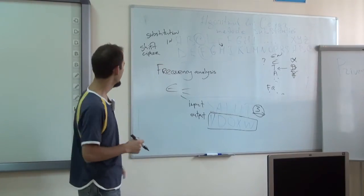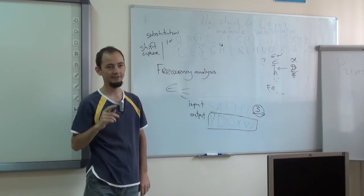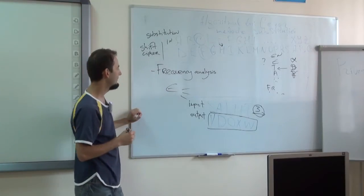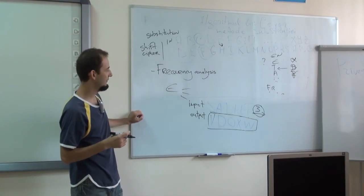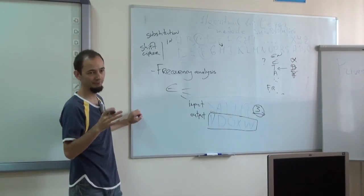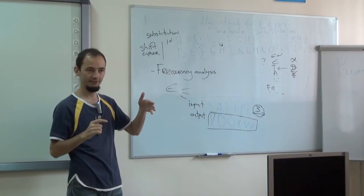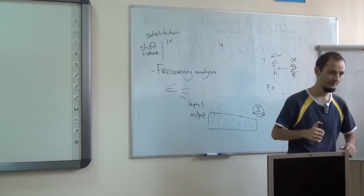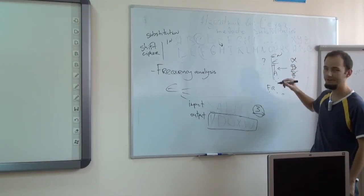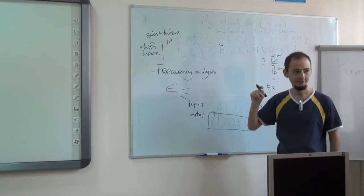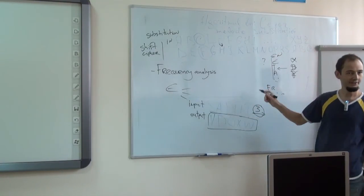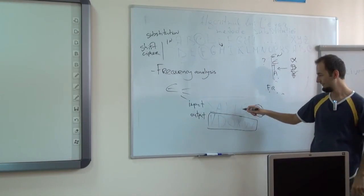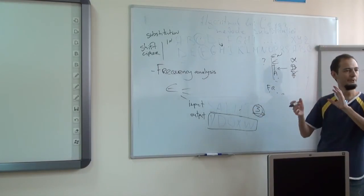So your challenge for the next assignment is to implement a tool that can break a shift cipher using several methods. One of them is to do this via frequency analysis. You will have to build a frequency table for each symbol found in the given text. You will have to compare it with what you know about the letter distribution in English. And based on this, you should tell me something like the secret key is this, the output is this, so the original encrypted text.